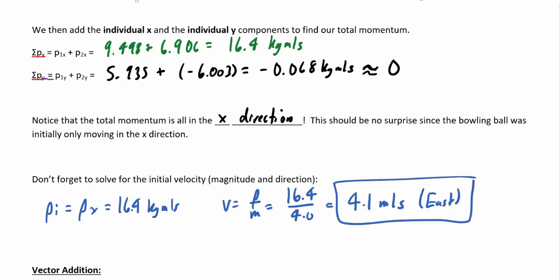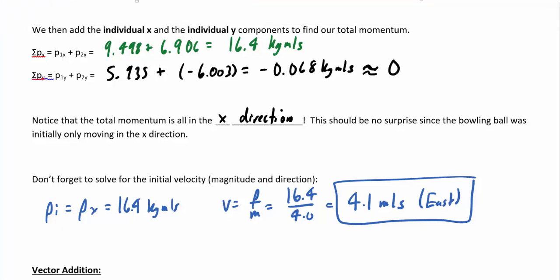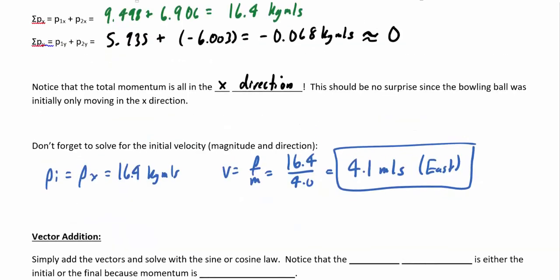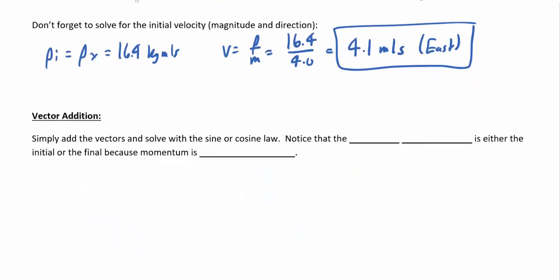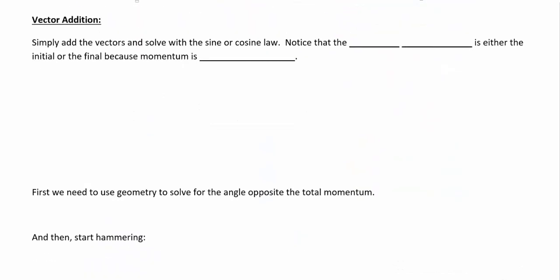Now we're going to solve this exact same problem in a slightly different way — the vector addition method. This is a little more direct, but you have to be careful. With vector addition, we just go ahead and add the two vectors. The fact that it's not going to make a right-angle triangle doesn't scare us, because we've got the sine law or cosine law.